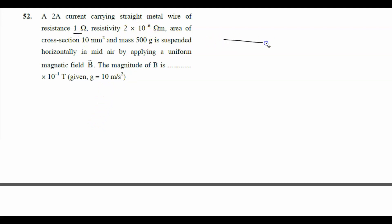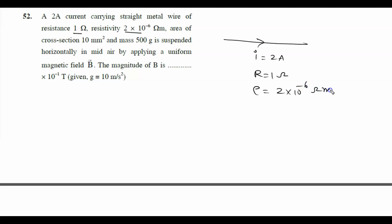A 2 ampere current-carrying straight metal wire has a resistance of 1 ohm and resistivity of 2×10⁻⁶ ohm·meter. The area of cross-section is 10 mm², which equals 10⁻⁵ meter square. The mass of the wire is given as 500 grams.